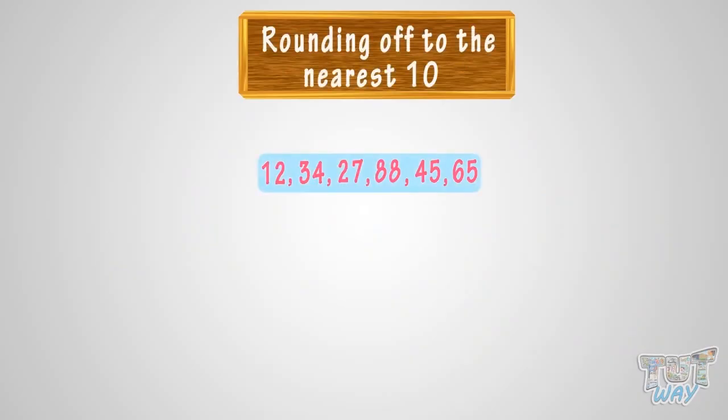Here are a few numbers: 12, 34, 27, 88, 45, 65. We have to round them up to the nearest ten.